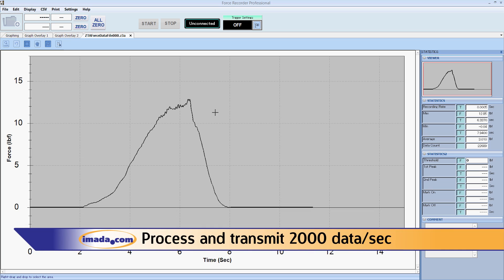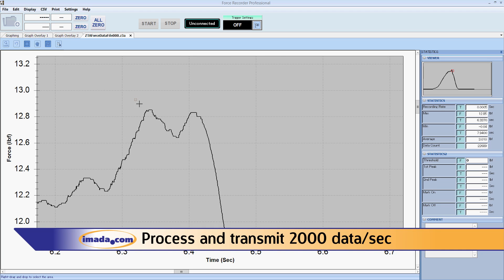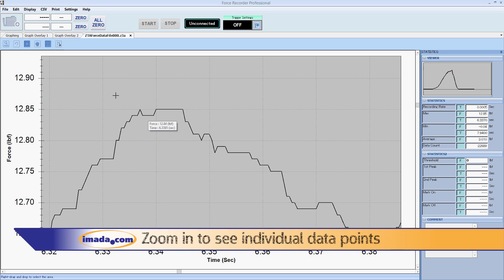The ZT series gauges process and transmit 2000 data per second, not just the peak from a high sampling rate.